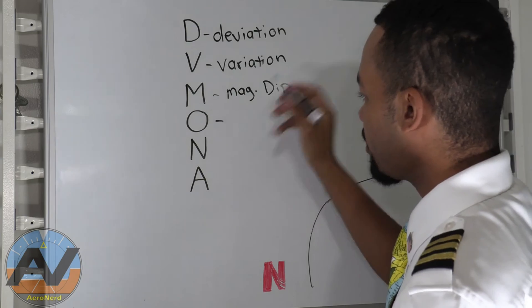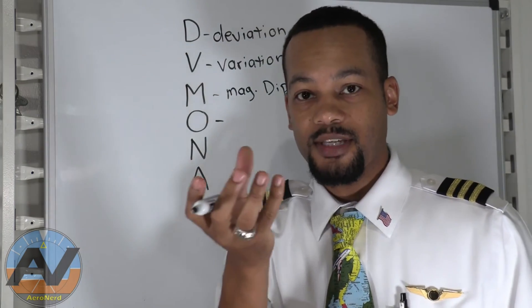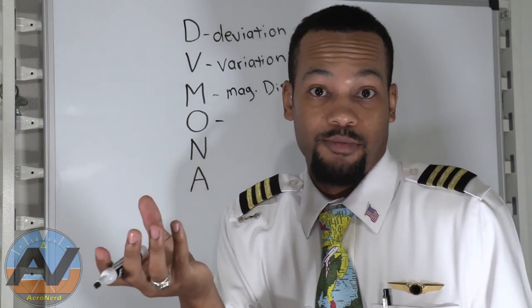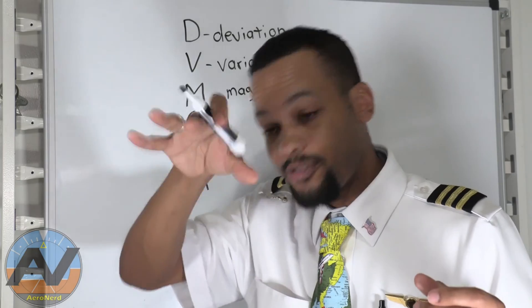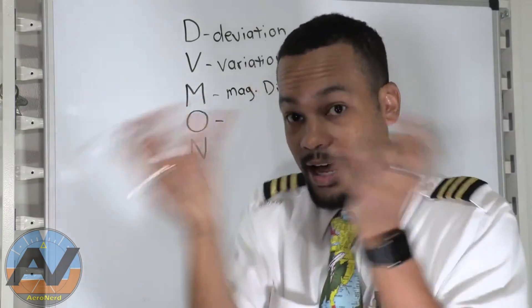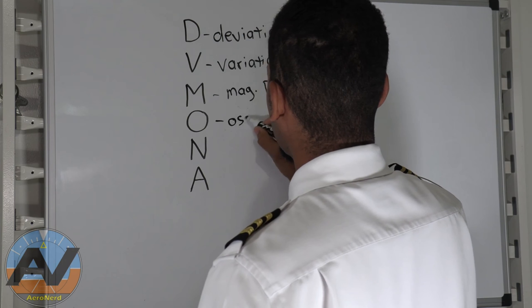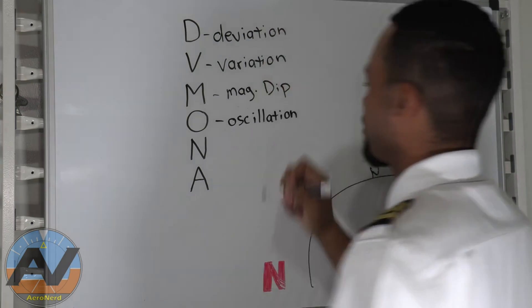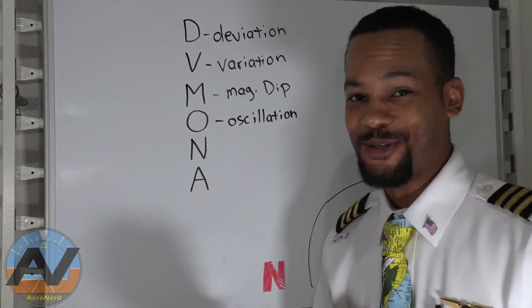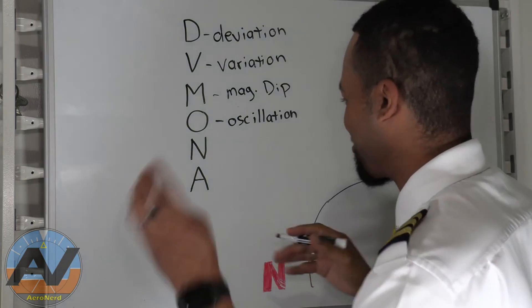Oscillation is literally when the compass is sitting in a bowl of kerosene pretty much. Now you're flying through the air, you have turbulence, you have vibration, the kerosene's moving around, you have that oscillation. So that's what oscillation is.